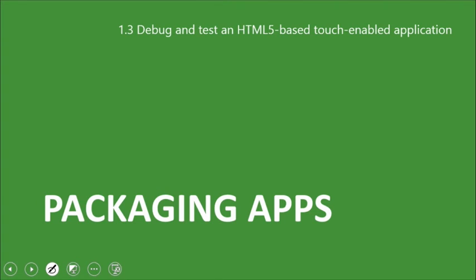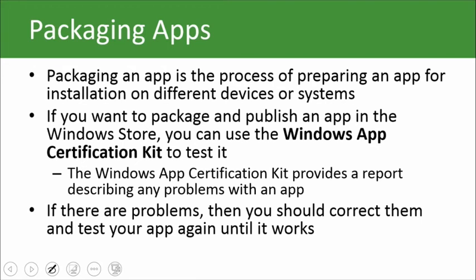All right. Packaging apps. This is our last little bit here, if I'm not mistaken. So packaging an app is simply the process of preparing it for installation on devices or different systems. If you want to package and publish an app in the Windows Store, you can use the Windows App Certification Kit. All that that does is provide a report describing any problems with an app, so it's sort of another validation step. If there are problems, you clearly can go ahead and correct them and then resubmit your app through the Windows App Certification Kit and make sure that everything's working properly.